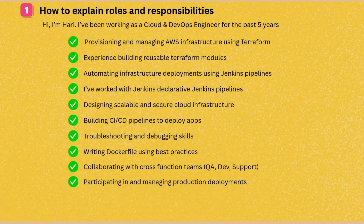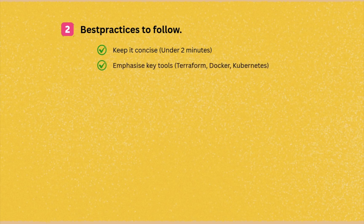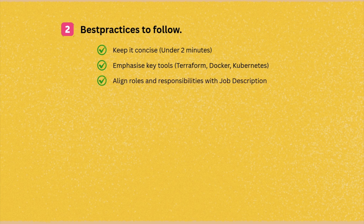If you have any questions, please put them in the comments — I will try to reply. Now let's move on to the best practices to follow. Keep the roles and responsibilities explanation within two minutes. I have seen some people explaining roles and responsibilities for ten minutes, which is not good because interviewers may not have the patience for that. Make sure that trending tools and services are included — Docker, Kubernetes, cloud computing, and Terraform are very important nowadays. Try to highlight those tools and services, and try to align your roles and responsibilities with the job description you're applying for.